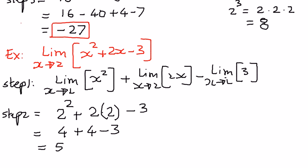Therefore, when we evaluate the limit of x to the power of 2 plus 2x minus 3 as x approaches 2, the value of that limit is equal to positive 5. In my next presentation, we shall see more examples on operations with limits.